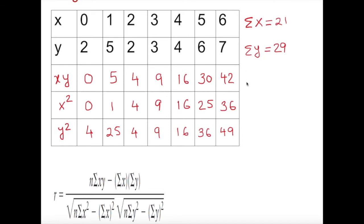Now I'm going to add all of this, it's going to give me sum of xy. The product is going to give us 106. Then sum of x squared is going to give me 91. And of course, sum of y squared is going to give me 143. Bingo.